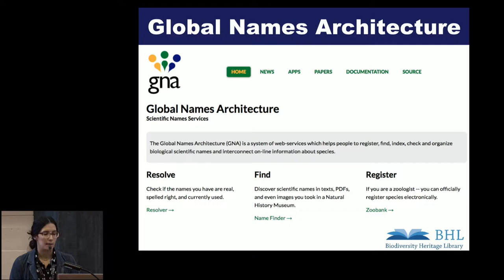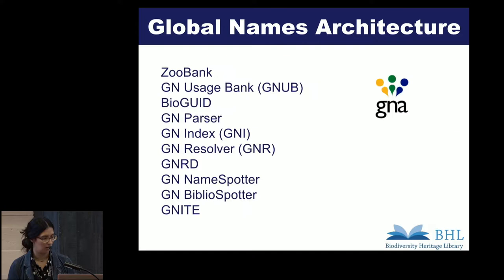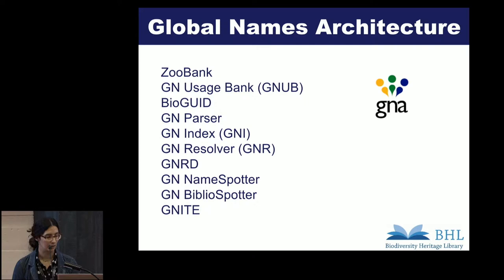BHL indexes their scientific names from the OCR text and uses the Global Names Recognition and Discovery Tool, which is made by Global Names Architecture. Global Names Architecture is a system of web services that helps people register, find, check, and organize biological scientific names and interconnects online information about the species. There are a suite of different tools made by Global Names Architecture, and I'm going to be talking about three of them today.